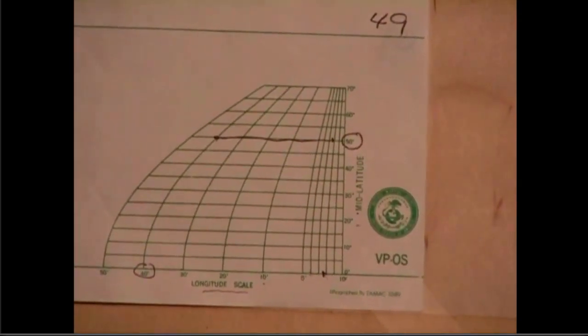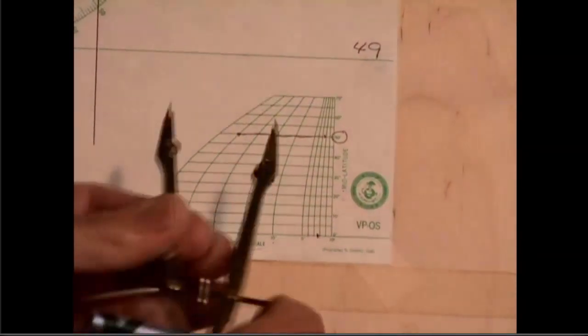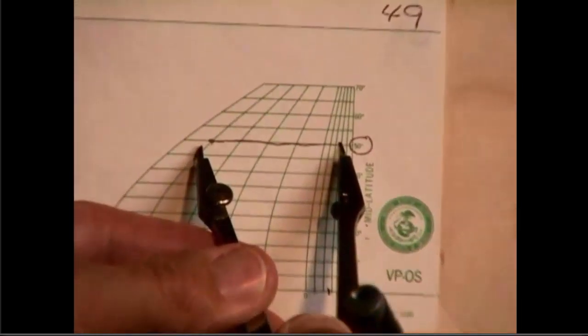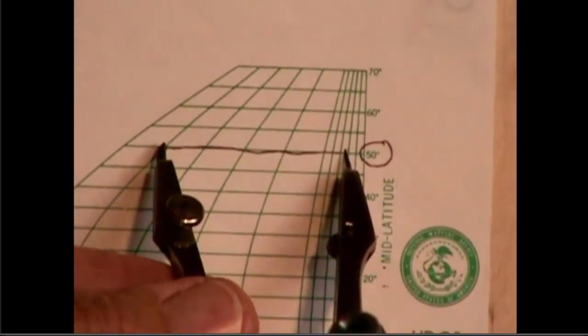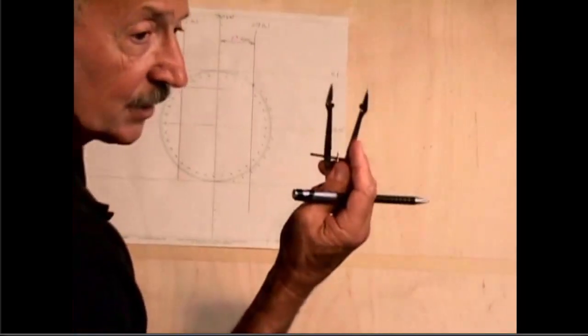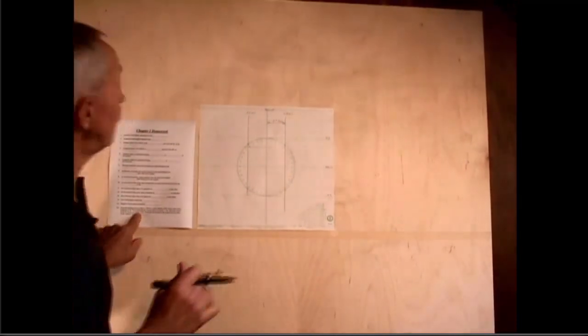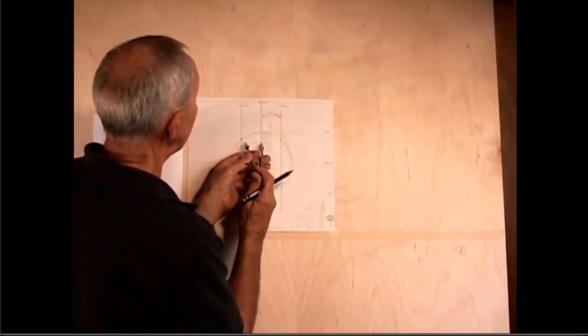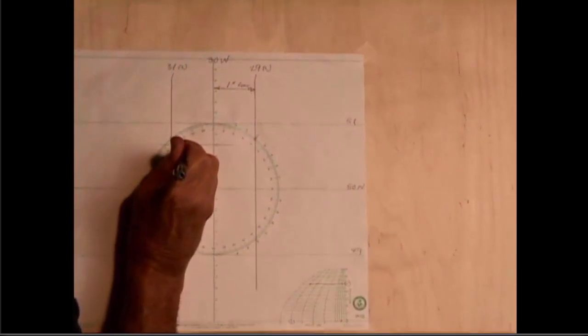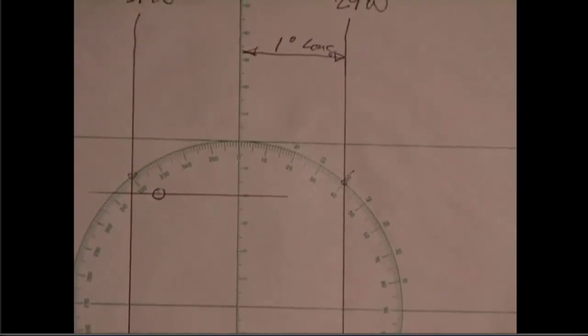So I simply take my dividers and set it here. And remember that I'm not setting these dividers down at the bottom, I'm setting it here at 50 degrees. So I come and set my dividers here at 50 degrees, I have 45 minutes now. And I'm going to come, it asks for 30 degrees 45 minutes west, so I'm going to put my point on the 30 degrees, strike a little mark here. And that point represents 30 degrees 45 minutes west and 50 degrees 40 minutes north.